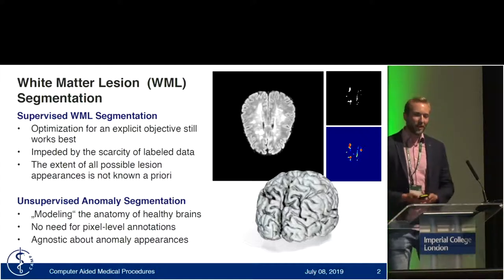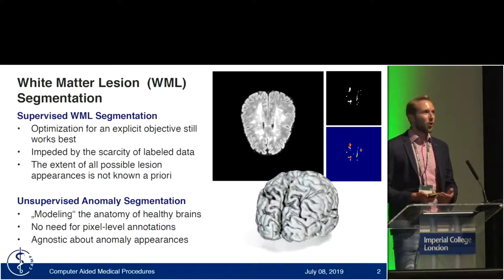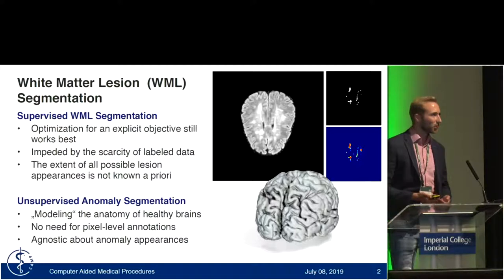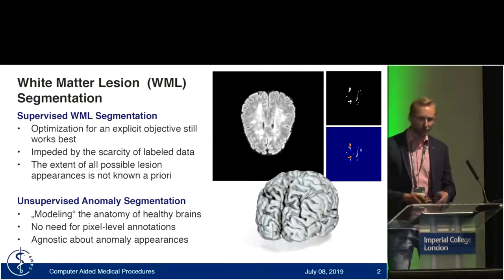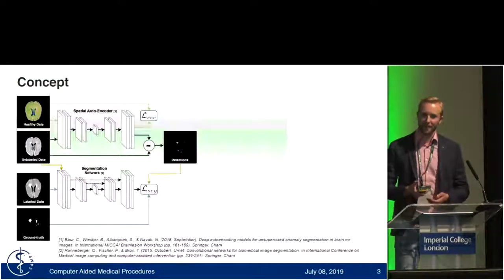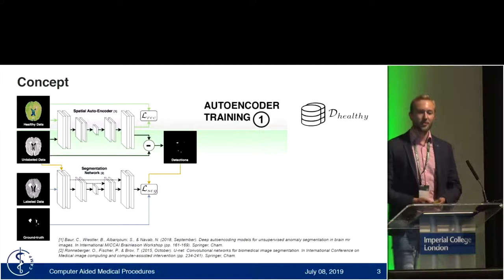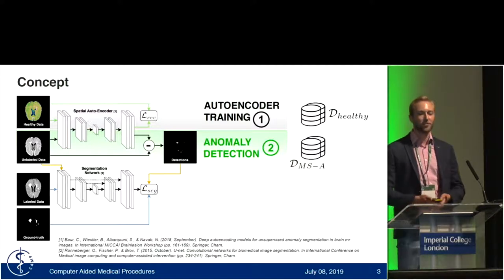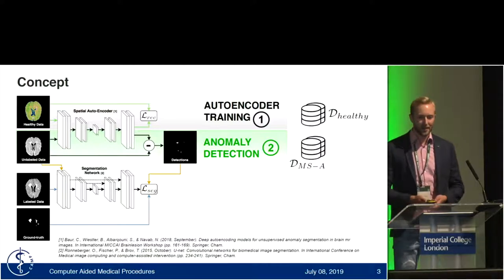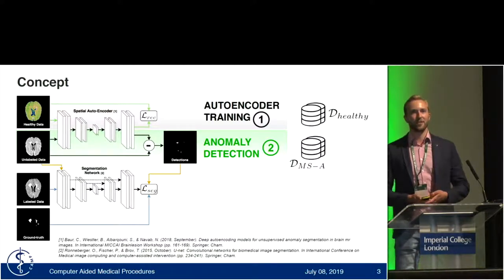So, in our work, we try to combine the strengths of both approaches — the strengths of supervised white matter lesion segmentation and unsupervised anomaly segmentation. We start off by training a spatial autoencoder to compress and reconstruct images of healthy brain anatomy, such that later on when you feed this autoencoder with a potentially anomalous sample, you will get a reconstruction where the anomaly has vanished.